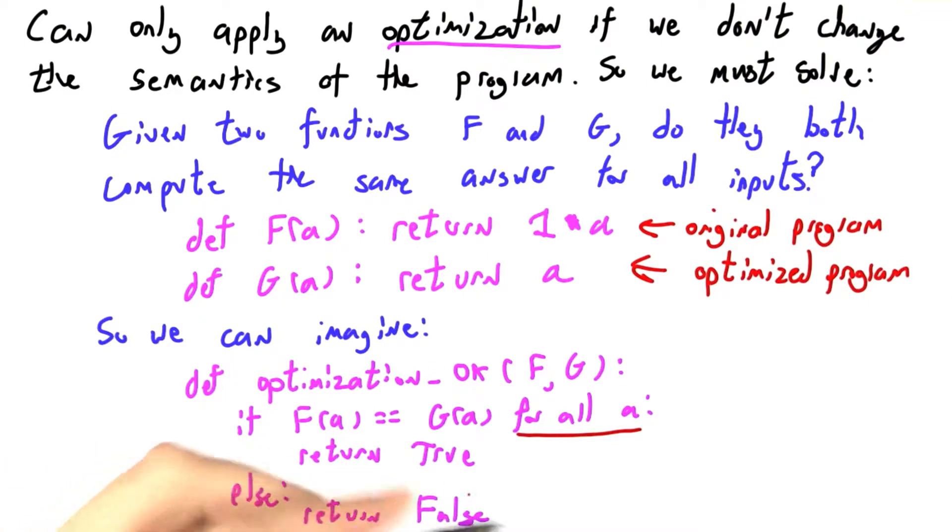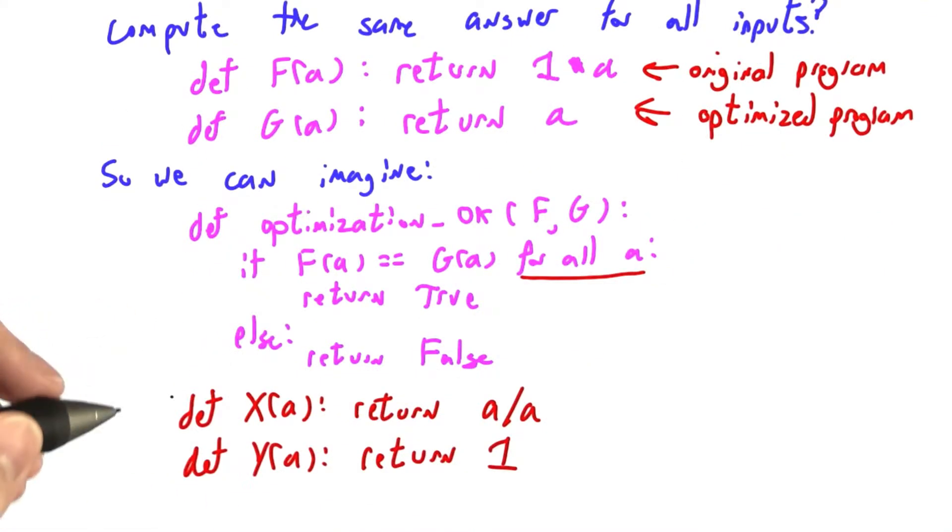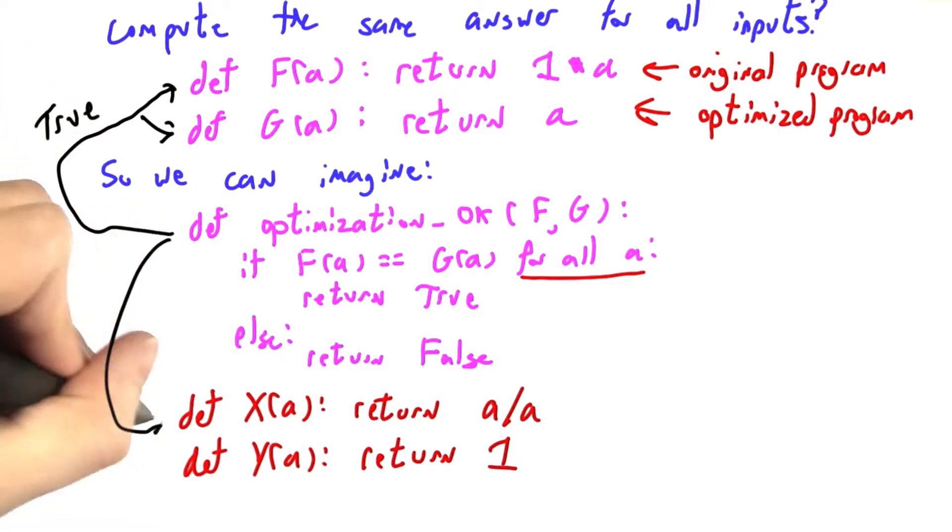Otherwise, the optimization is not safe, so we don't apply it. So just to give one more concrete example, we expect optimization_ok of f and g to return true, but optimization_ok of x and y down here, where x is a divided by a and y is 1, this should return false,